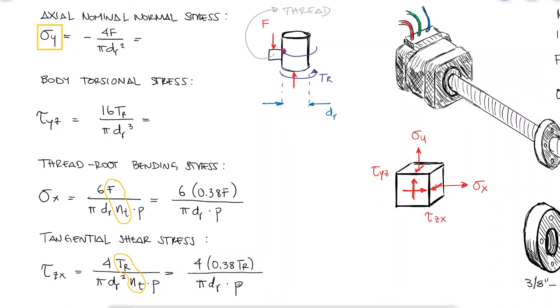The axial nominal normal stress and the body torsional stress do not depend on the number of engaged threads, so those two expressions remain the same.